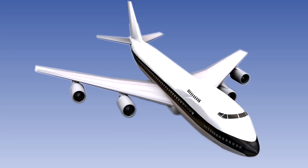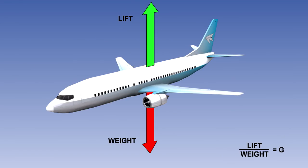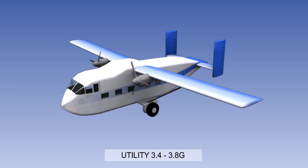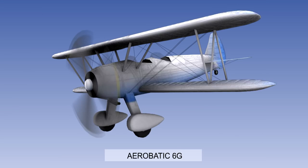The maximum load that a designer would expect an airframe or component to experience in service is termed the design limit load. This load is defined as a load factor. Load factor is the ratio of the lift of an aircraft to the weight of the aircraft. The load factor is expressed in multiples of g. In straight and level flight, lift is equal to weight. So the ratio of lift to weight is 1 and the load factor is 1g. The design limit load is 2.5g for public transport aeroplanes and 3.4 to 3.8g for utility aircraft and 6g for aerobatic aircraft.